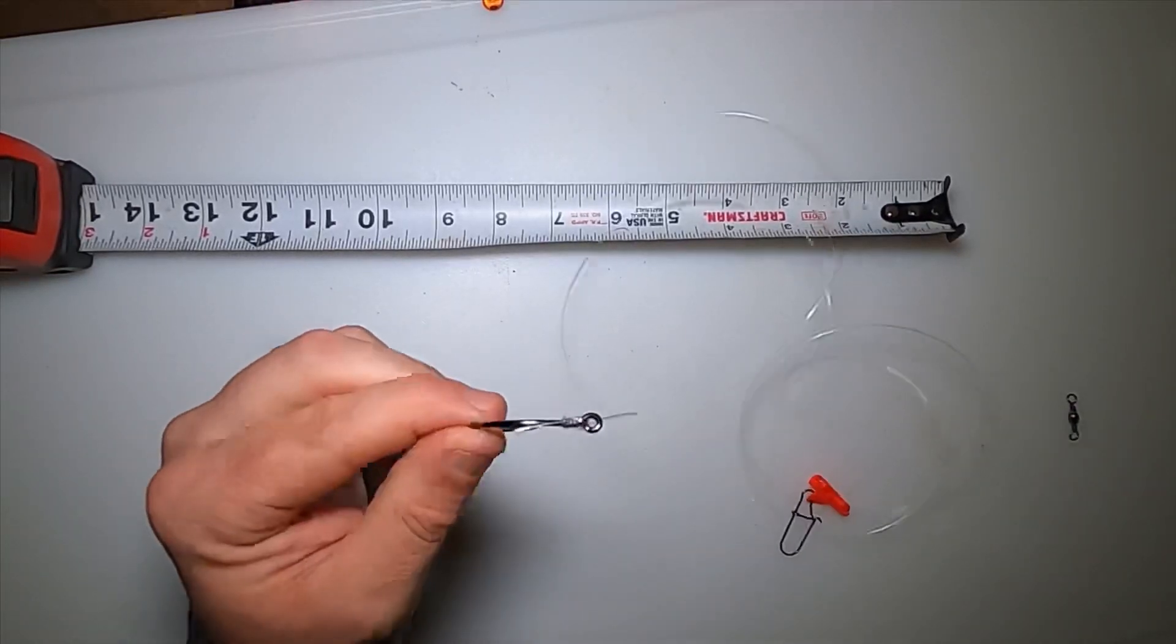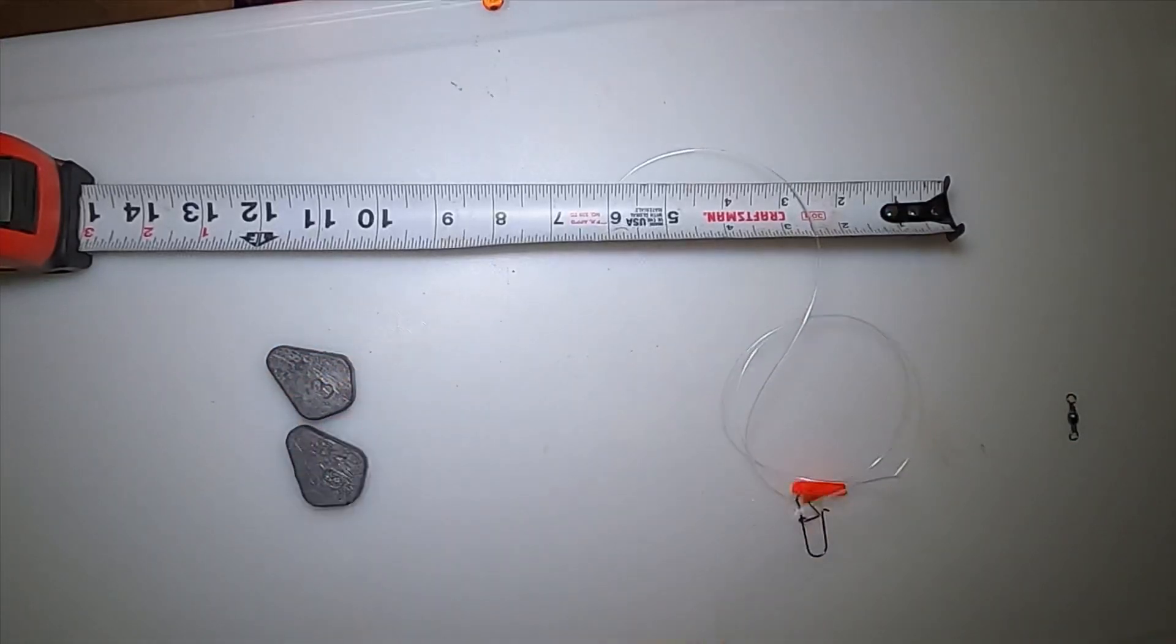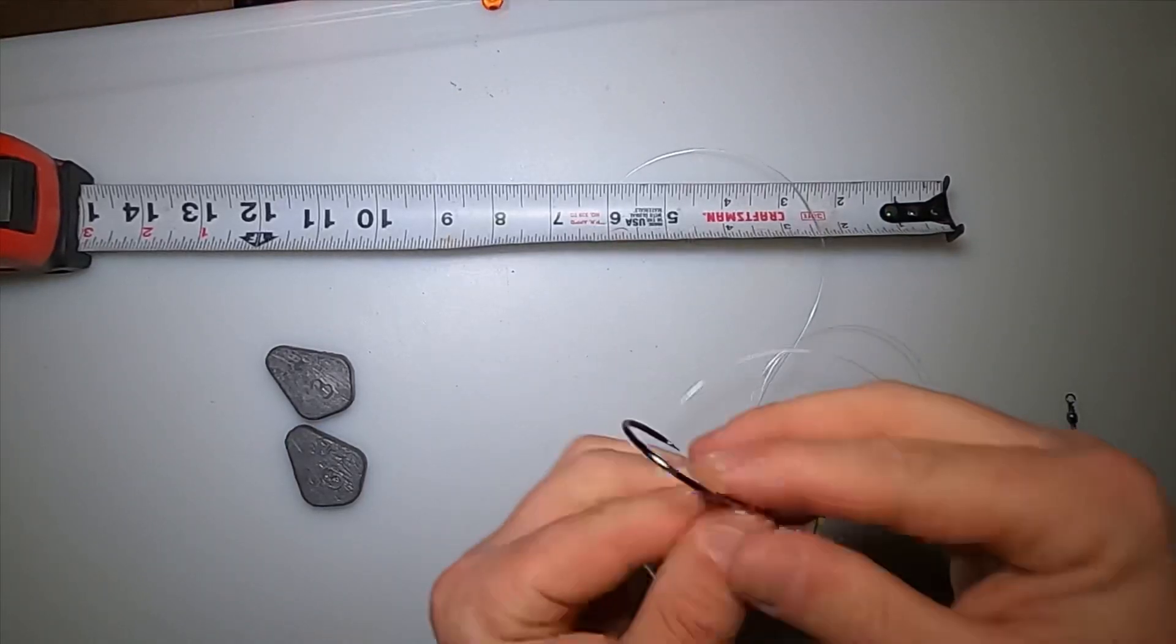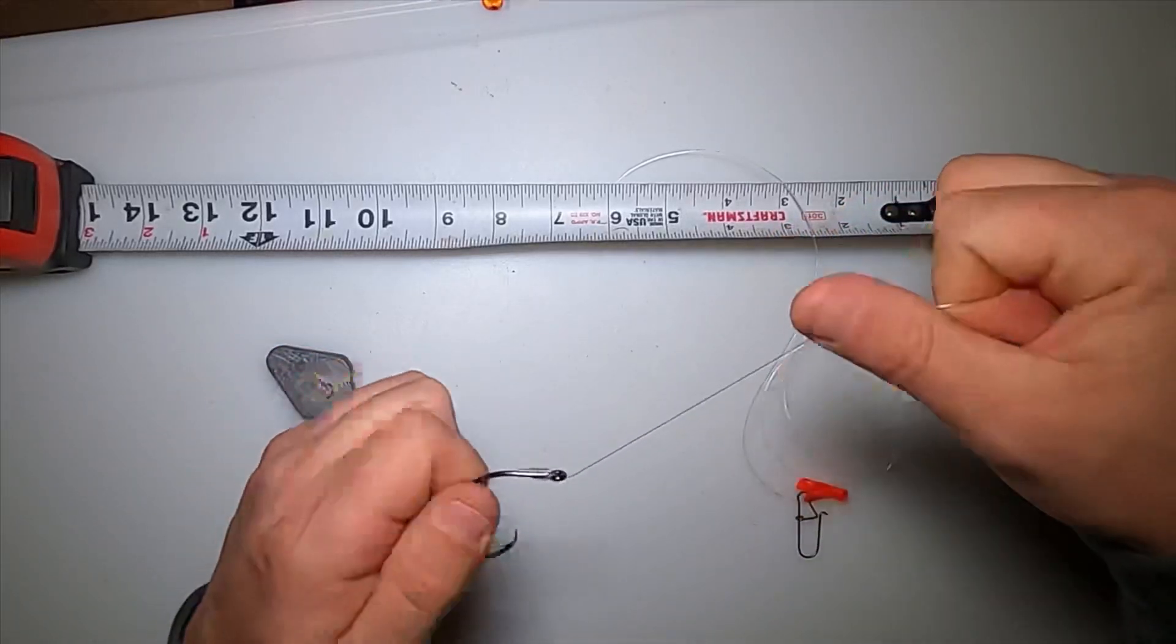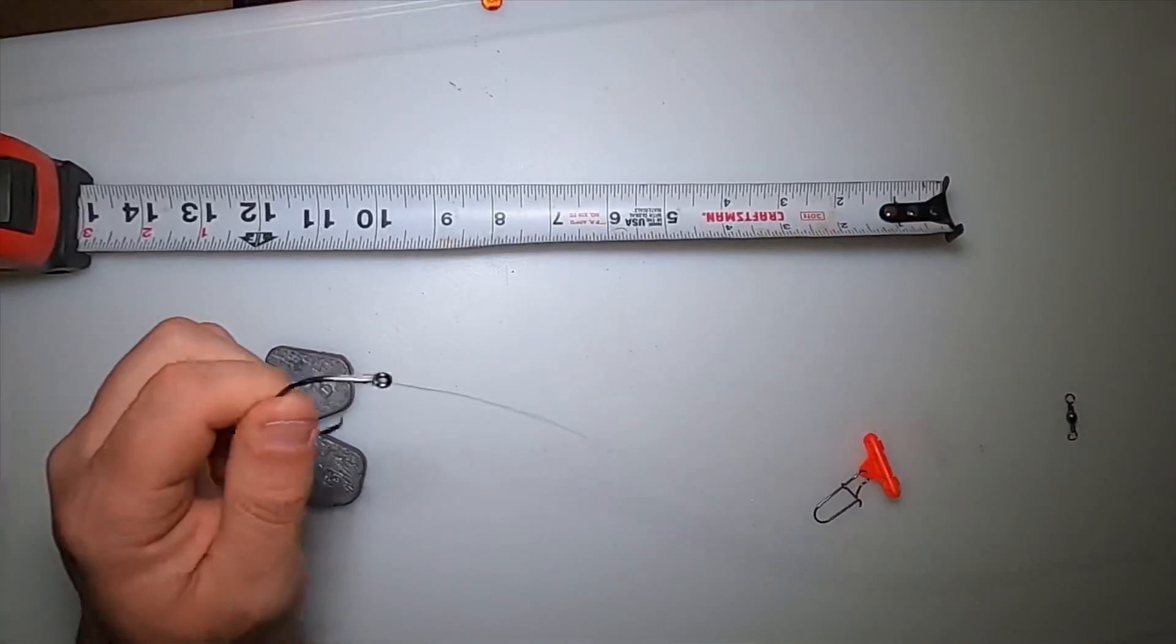Then you just pull it through. You can snip off a little bit of this. I'm going to leave a quarter of an inch to an eighth of an inch. You're not going to pull that off. If you break that, something's wrong.